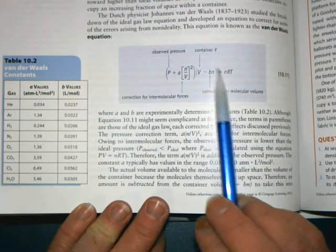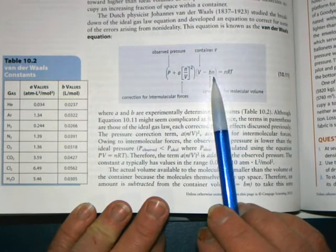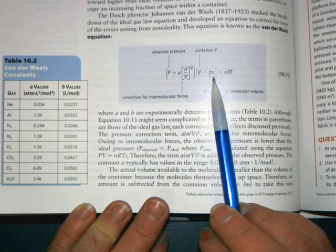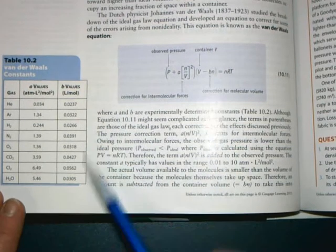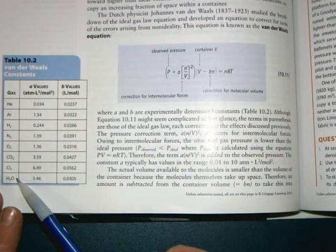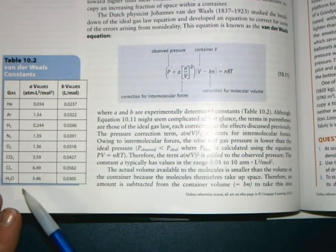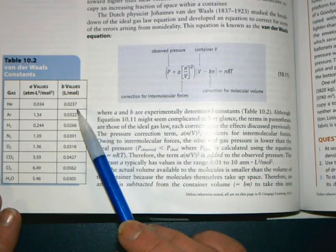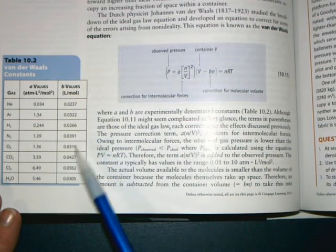This corrects for the particle volume themselves. You will be given B values that are according to your material. The molecular geometry as well as size is revealed in the actual B value.